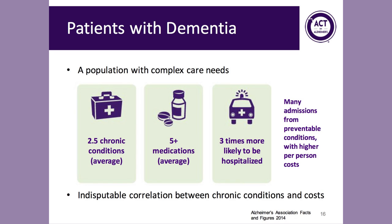People with dementia who receive primary care have on average 2.5 chronic conditions and take five or more medications. They're also three times more likely to be admitted to hospitals at higher per-person payment rates and for a variety of often preventable conditions, including dehydration, urinary tract infection, pneumonia, and delirium. It's clear that there is a correlation between chronic conditions and cost, and that's not any different for people with dementia who have a lot of both.